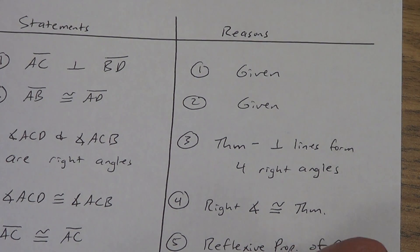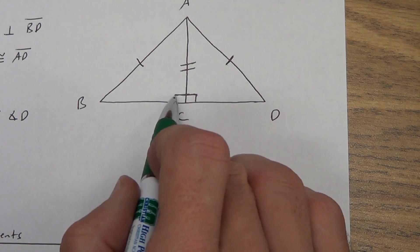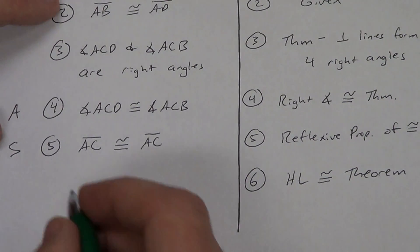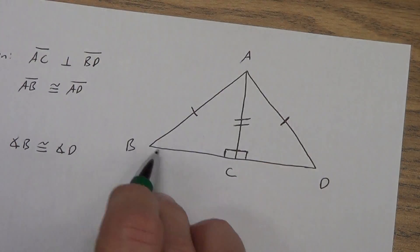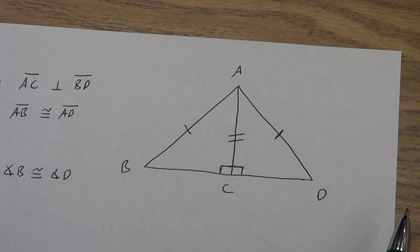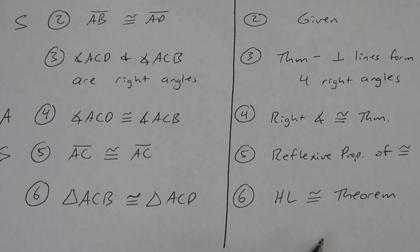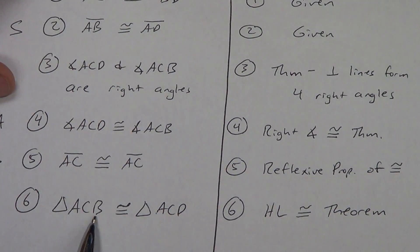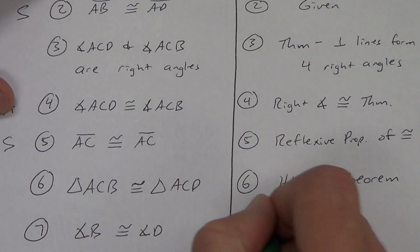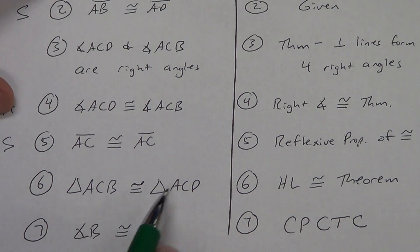So I'm going to write HL congruence theorem as my reason — this one's a theorem. Remember, H is the hypotenuse. AD and AB are hypotenuses of these right triangles — they're across from the right angles. AC is one of the legs, and that's all you need is one leg. So let's name our triangles: triangle ACB is congruent to triangle ACD. Now, we were trying to prove angle B and angle D. They're in the same position — corresponding — so angle B is congruent to angle D because of CPCTC.